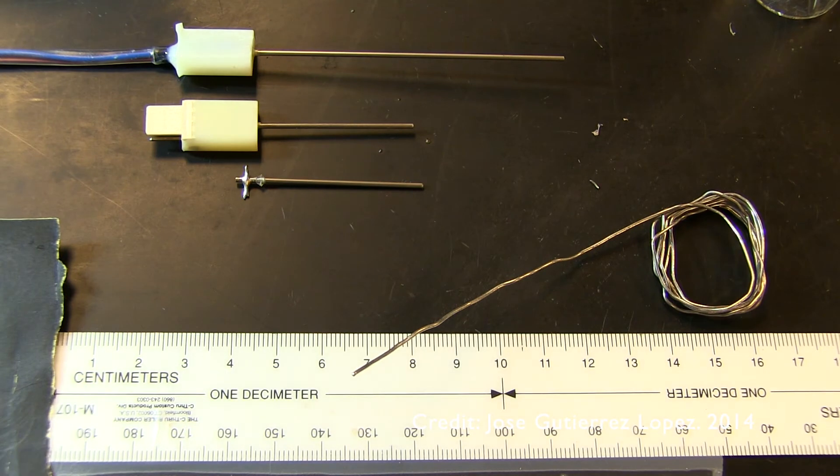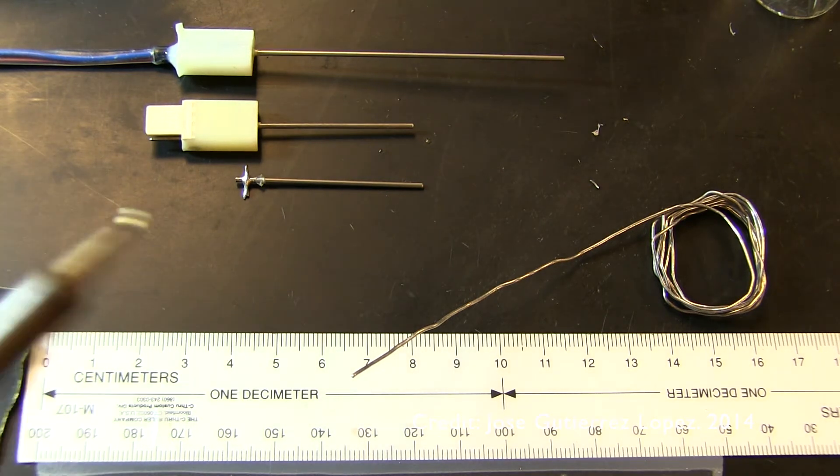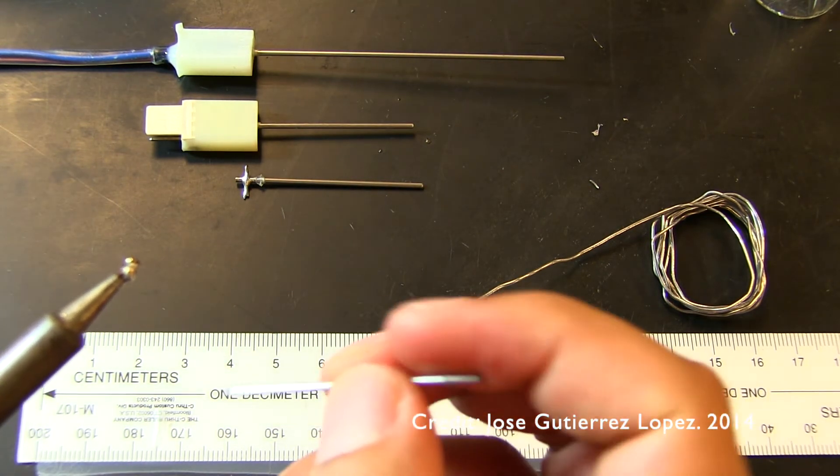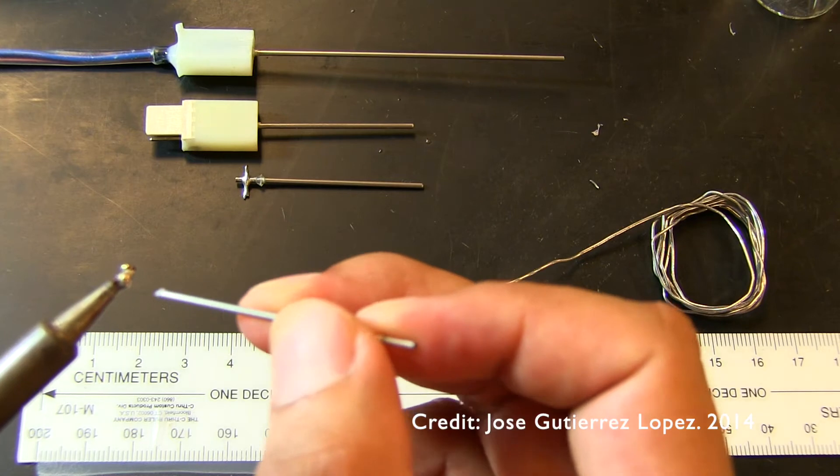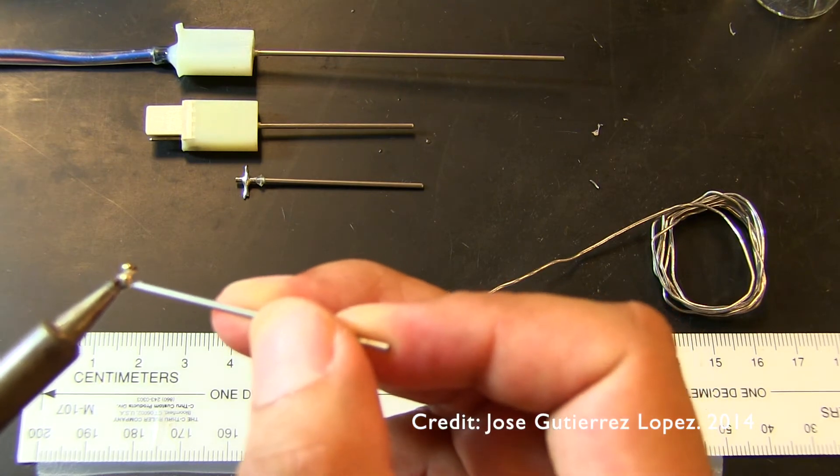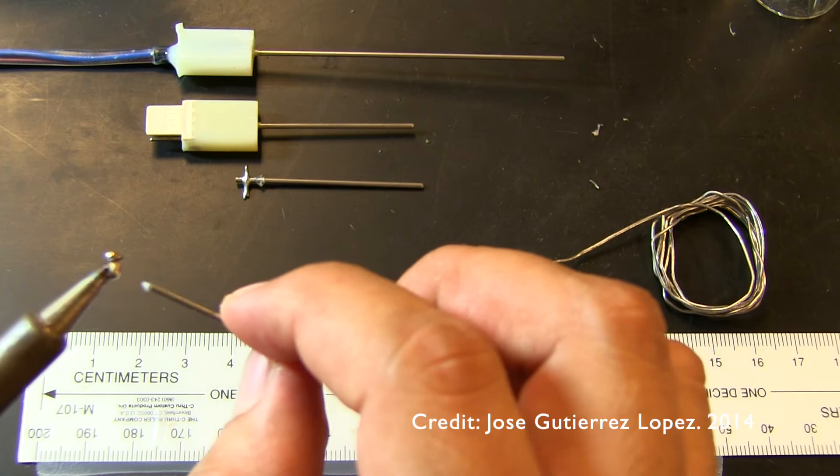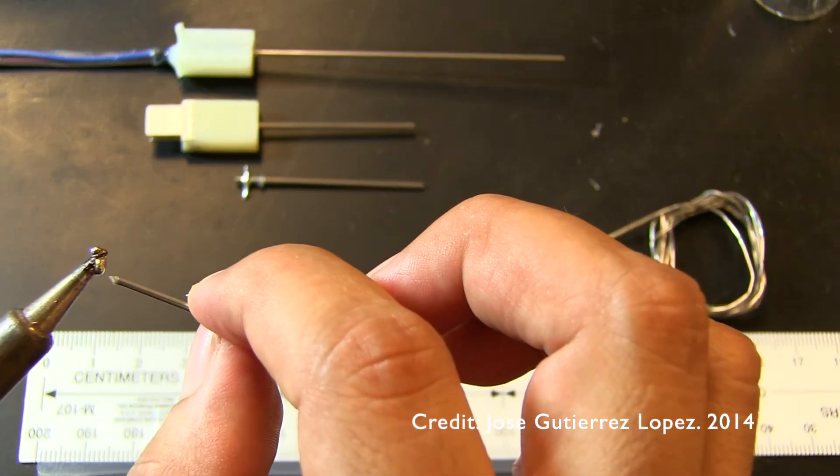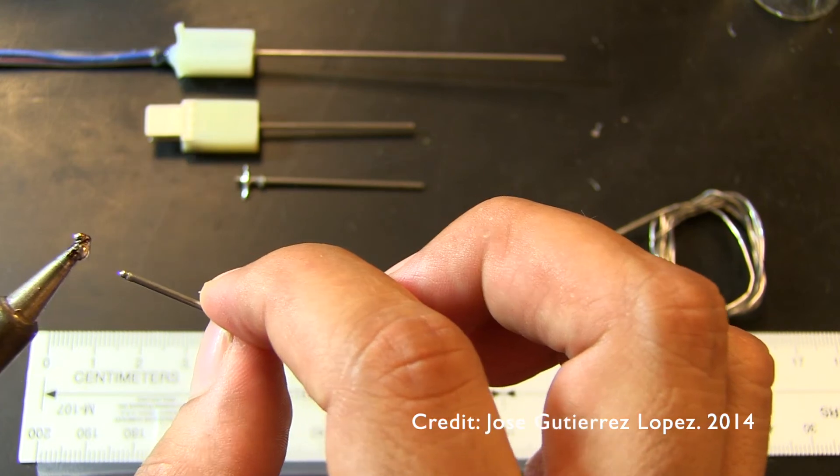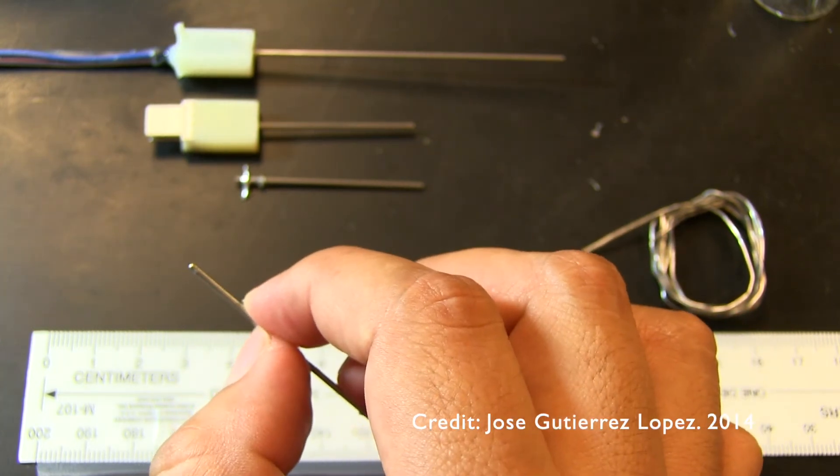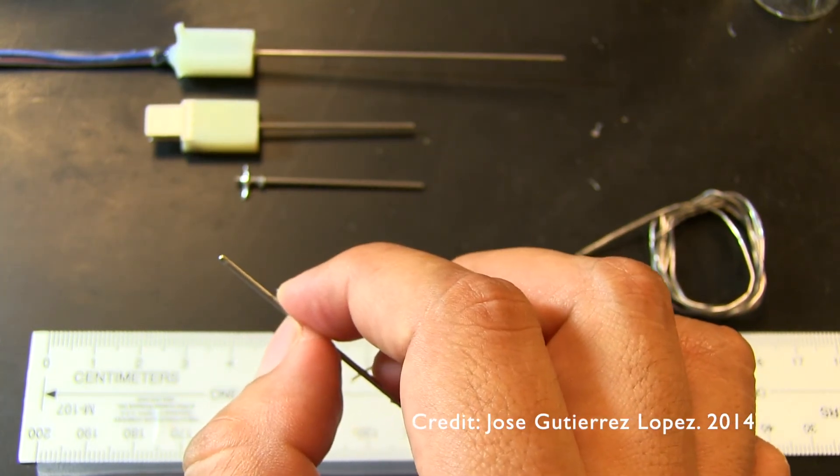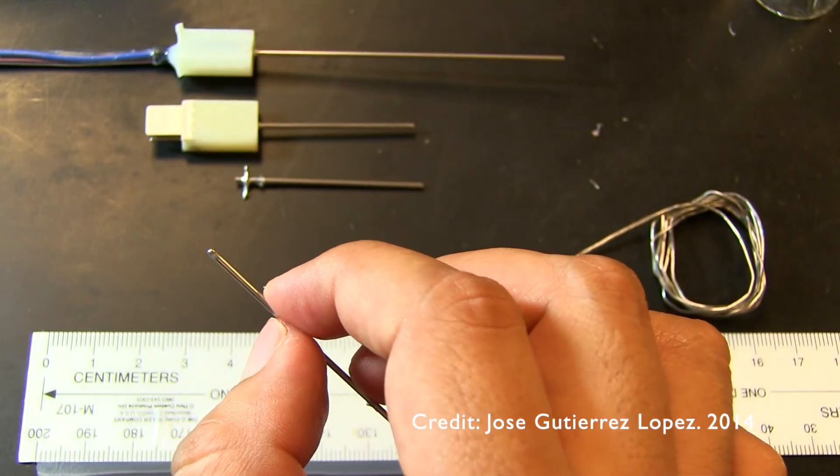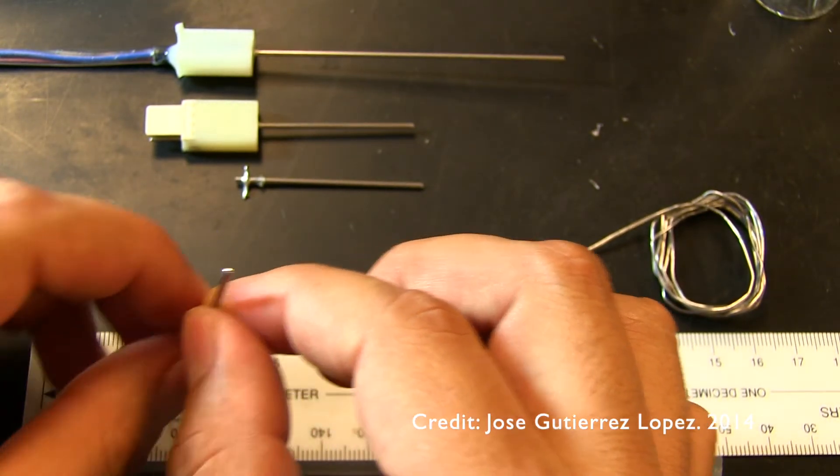Then I dip the needle in soldering flux, and then with the soldering iron I just apply a small amount of solder on the tip of the needle. Just gently. I'm going to try to do so in front of the camera. Just one touch is enough to seal the tip of the needle.